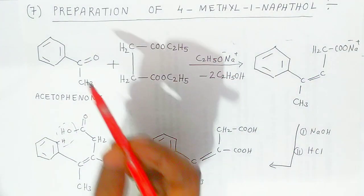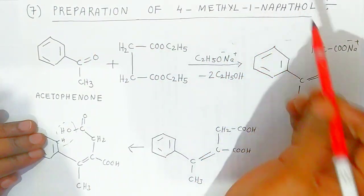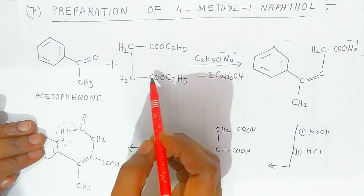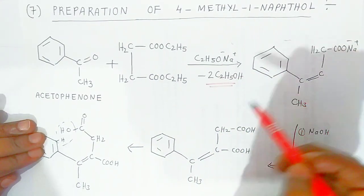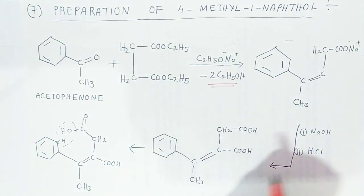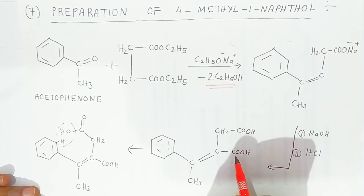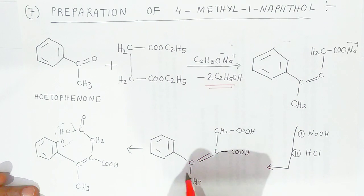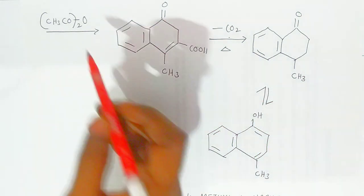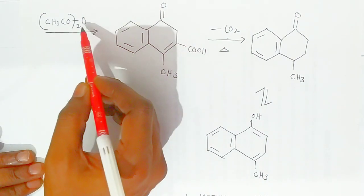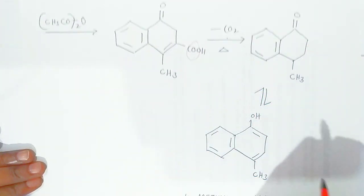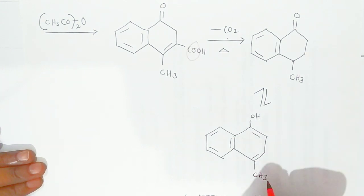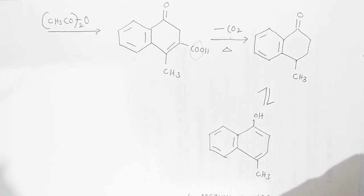The last preparation is 4-methyl-1-naphthalene. Acetophenone reacts with diethyl succinate in presence of sodium ethoxide, with elimination of ethanol, forming the sodium salt. This salt in presence of NaOH and HCl gives the unsaturated acid with a benzene group. Intramolecular addition takes place forming a cyclic compound; in presence of acetic anhydride this compound is formed, and upon heating, carbon dioxide is eliminated to give 4-methyl naphthalene.